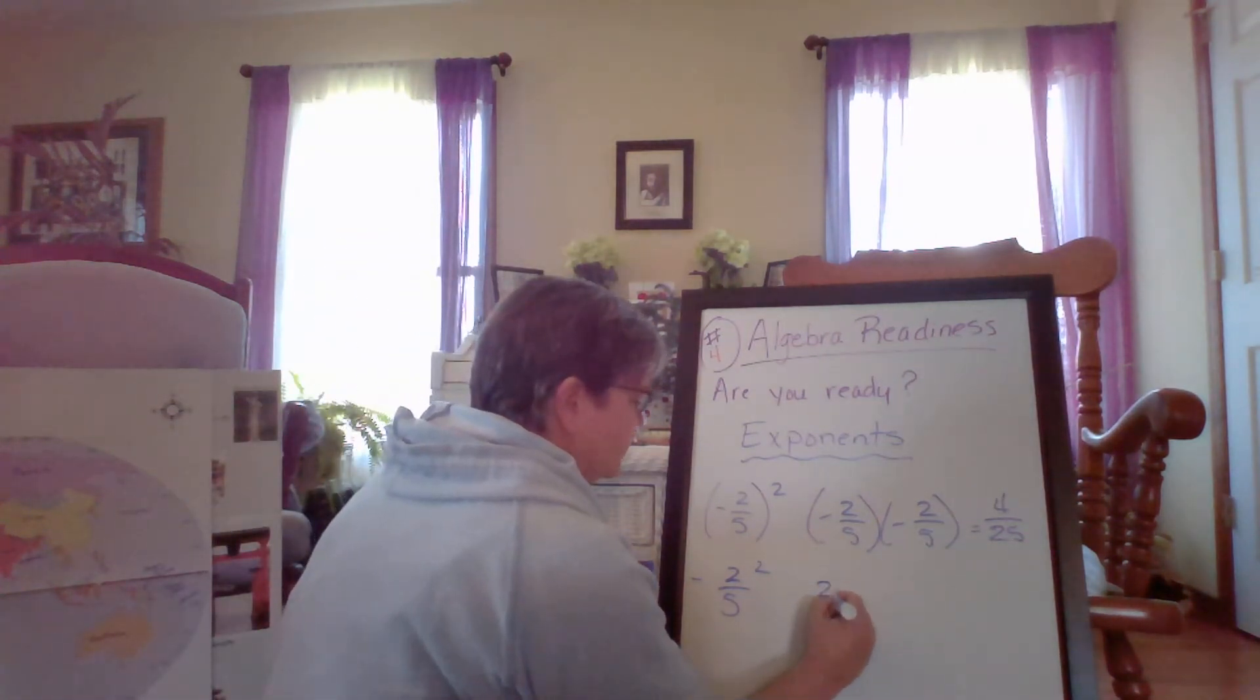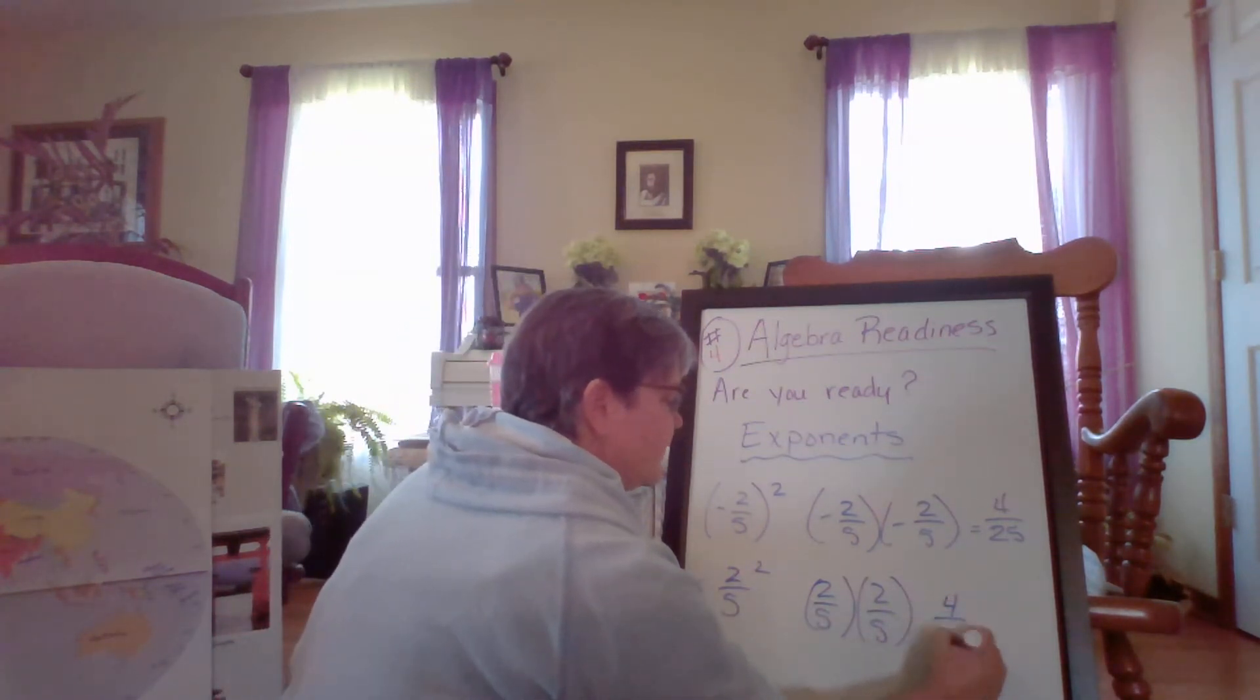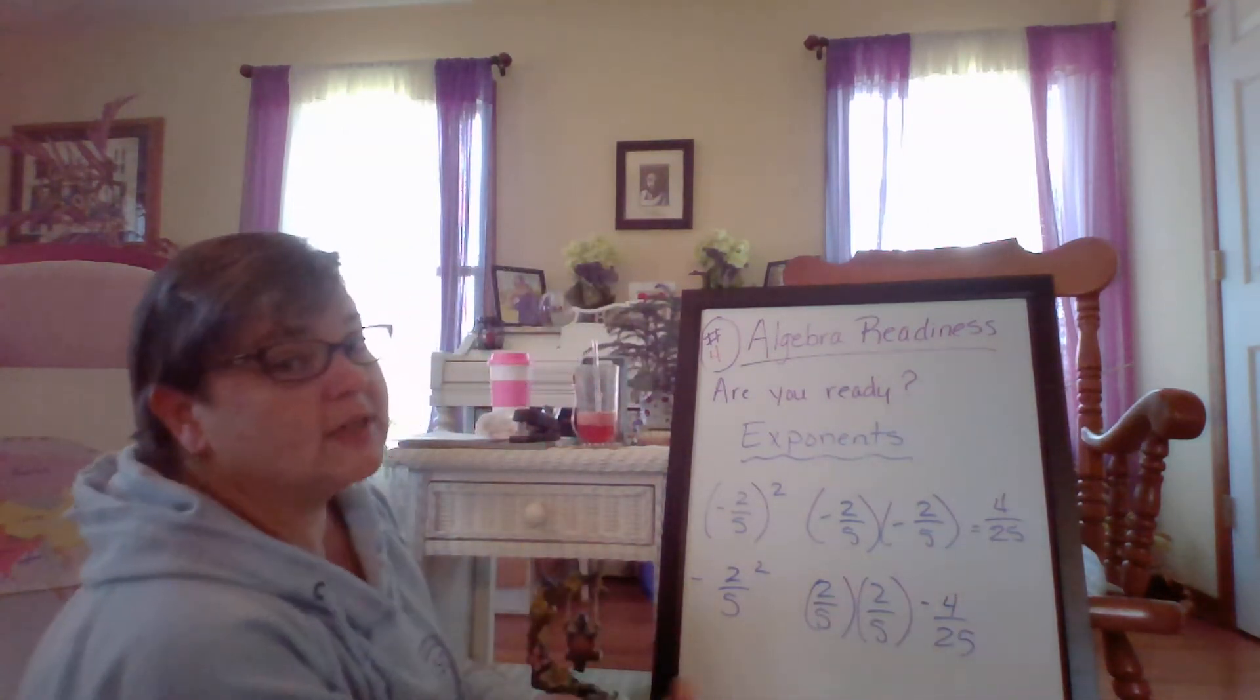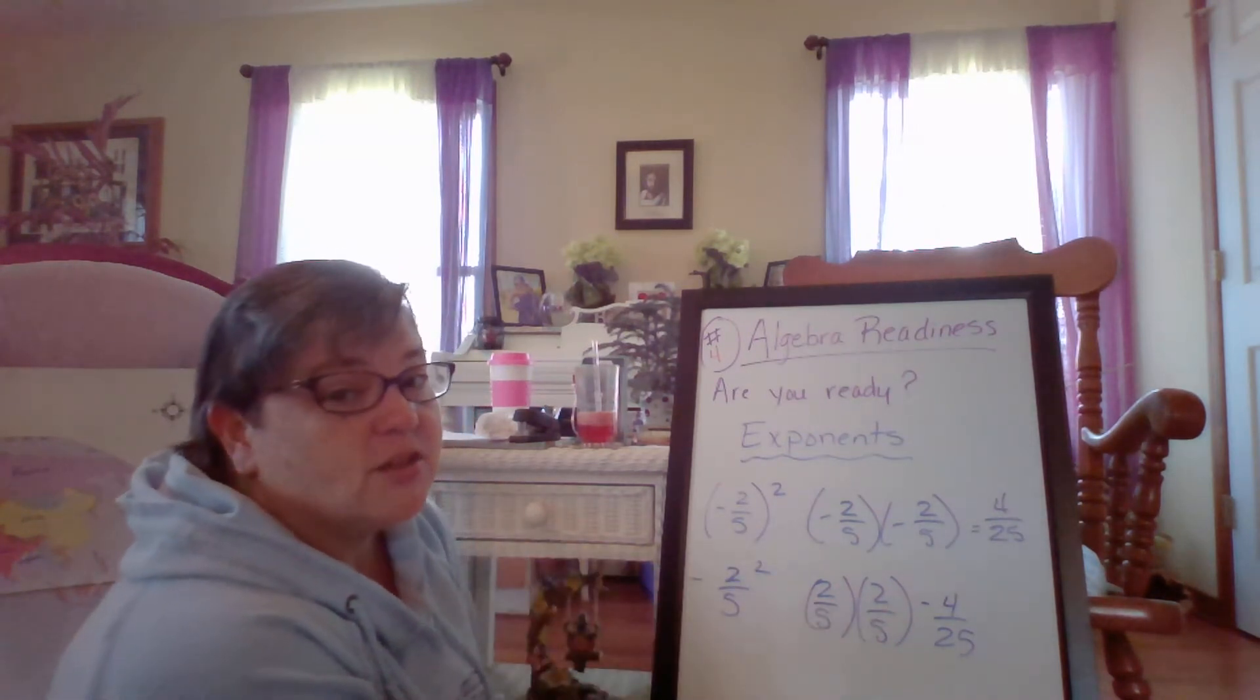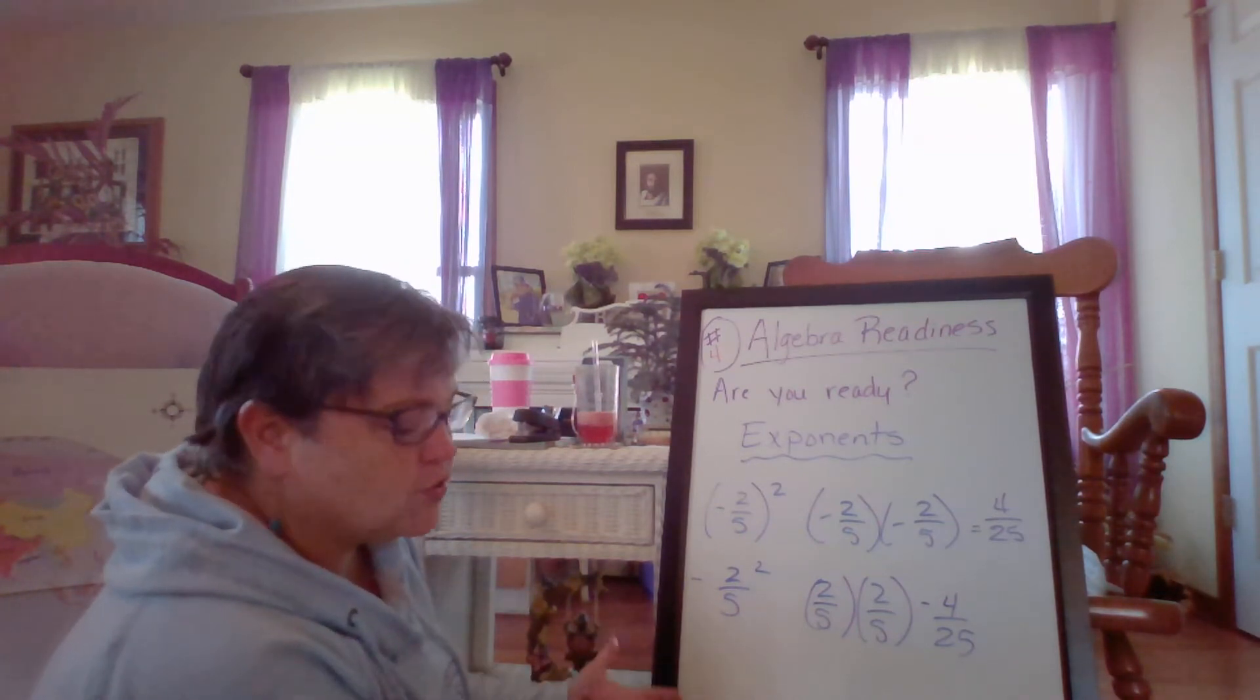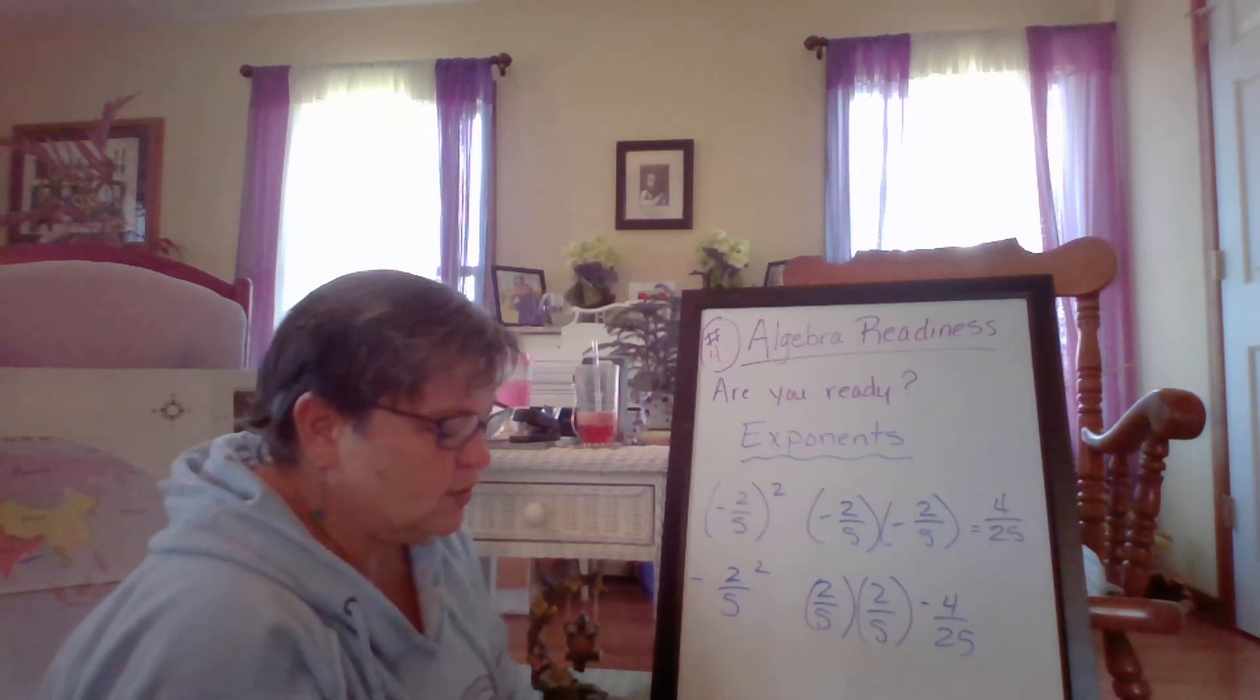Here I have two-fifths times two-fifths, and I get four twenty-fifths. But the negative comes along in the answer. It is not inside parentheses, so I'm bringing it along to the end of my answer. This is something that algebra students struggle with all the time, to get the parentheses correct. So I wanted you to know that.